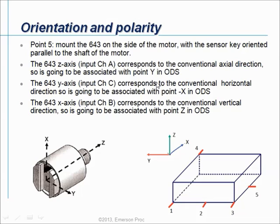In point 5 the influence is bigger because the mounting direction of the sensor becomes completely different. Now your channel A has to be associated with Y, your channel C has to be associated with minus X, and your B has to be associated with Z. So how to do it on the data collector?